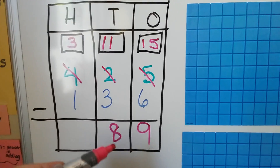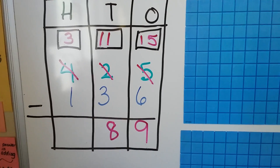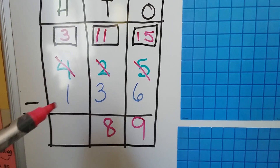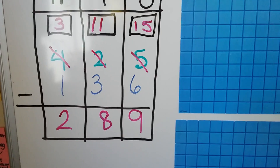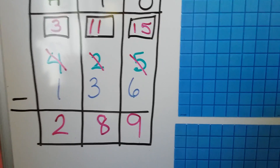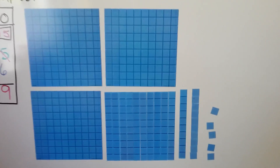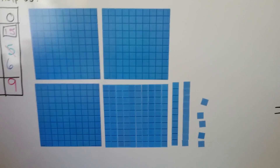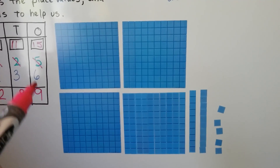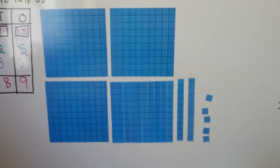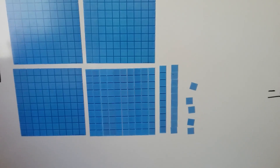We can do addition to check our subtraction. 3 minus 1 is a 2, so we should have 289. So let's see how this works. We had 425 here, and we need to take away six ones, but we can't take away six ones because there's only five ones there.